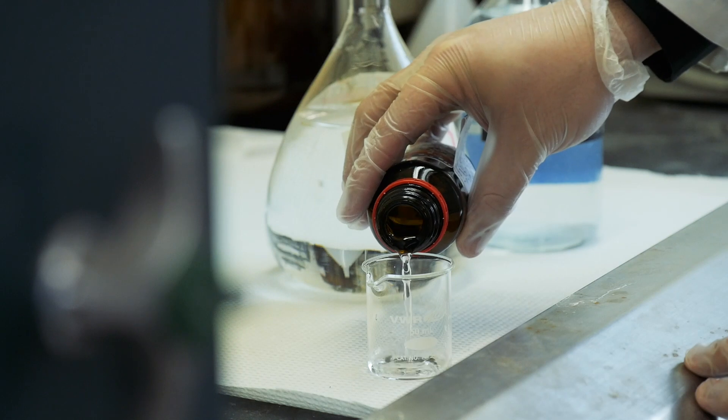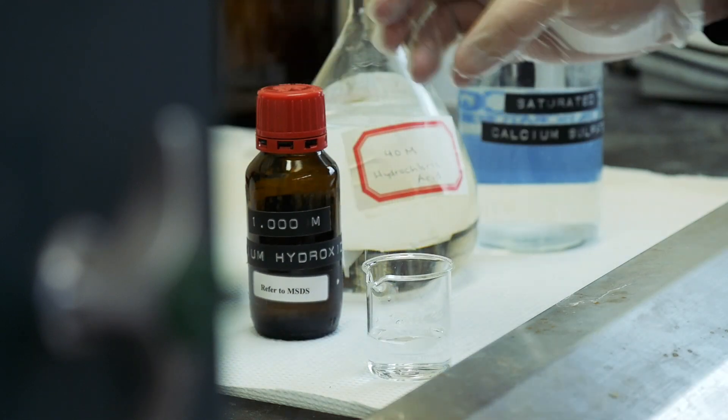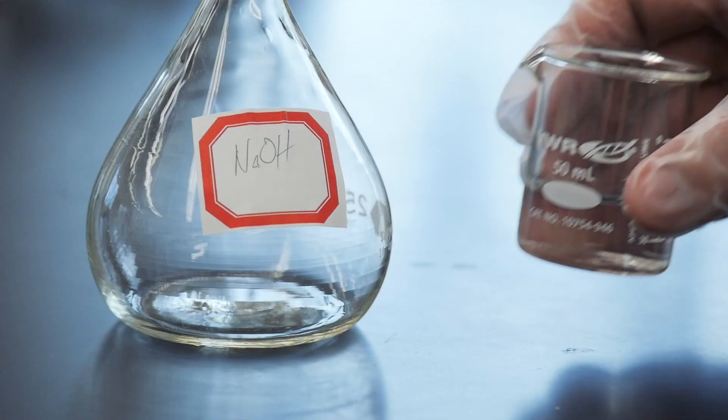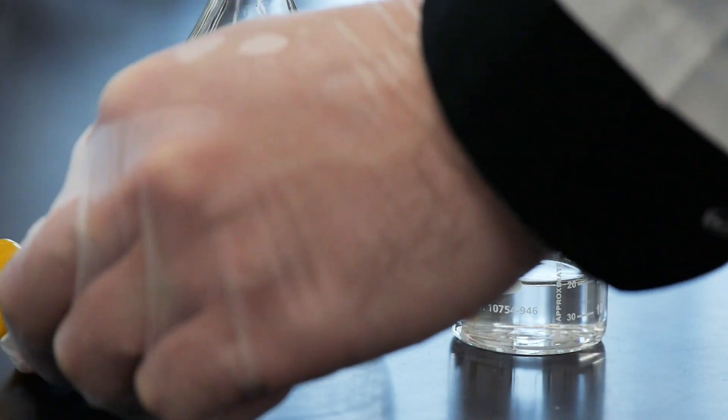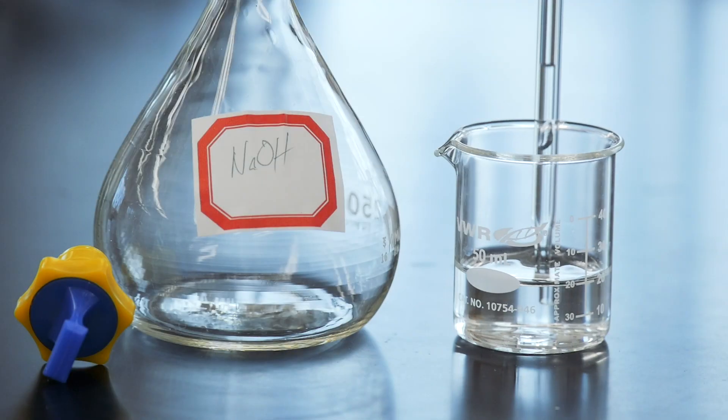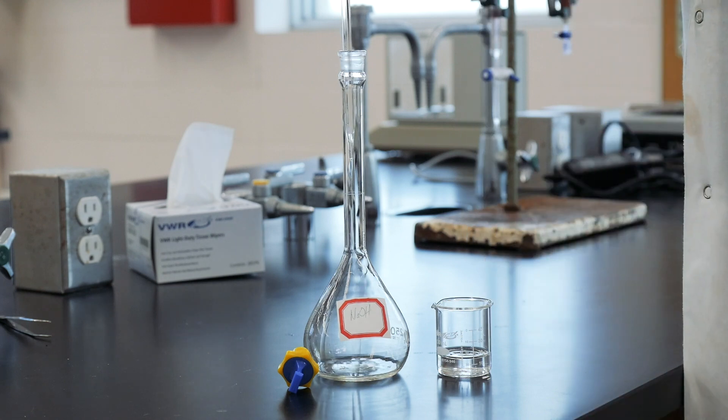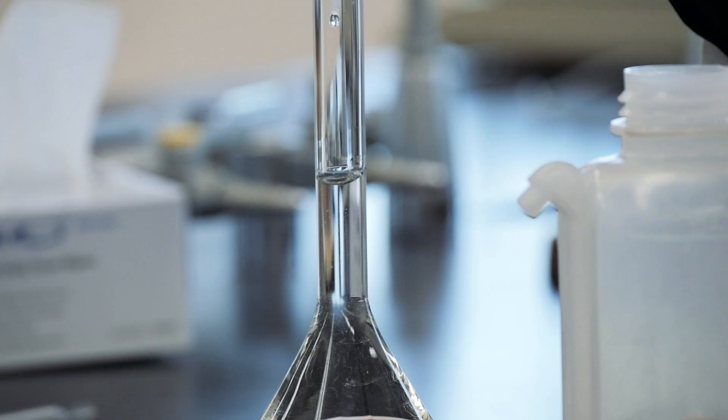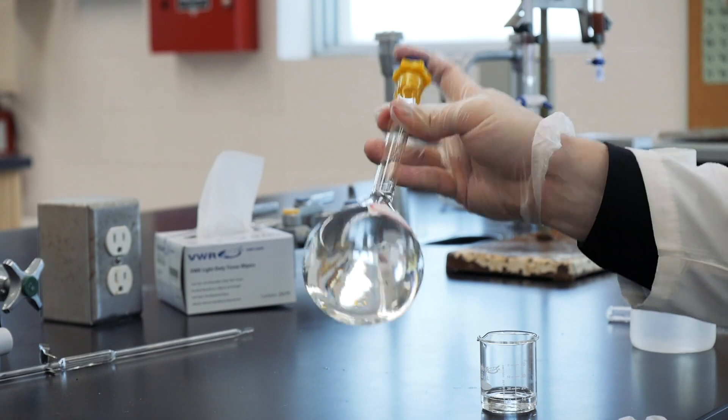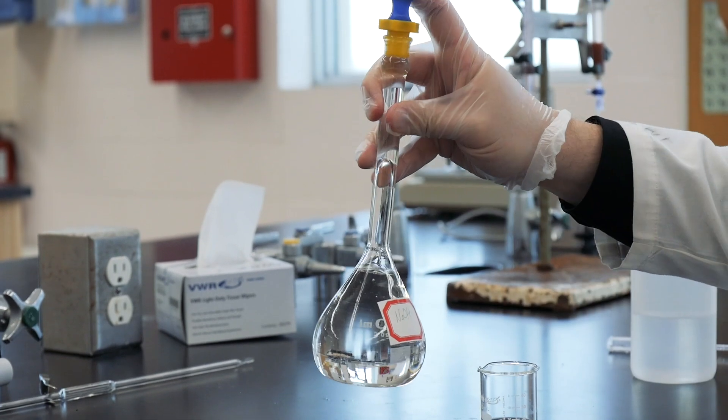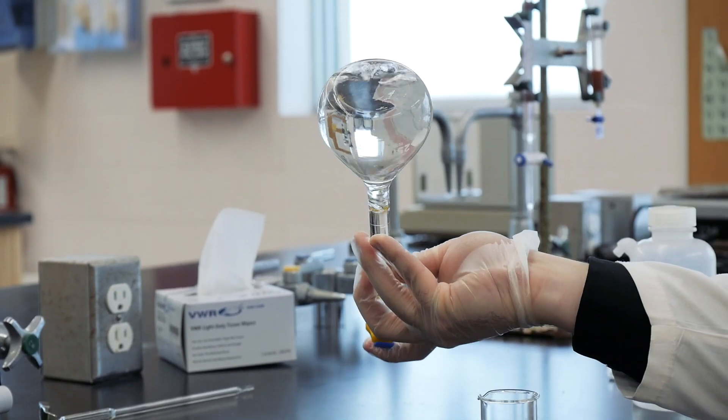To start, collect 20 mils of the 1 molar sodium hydroxide solution in a clean, dry 50 mil beaker. Then pipette a 5 mil aliquot of that solution into a 250 mil volumetric flask and fill it up to the mark with deionized water. Be sure to mix thoroughly. You'll use this solution later when determining the hydrogen ion concentration in your sample.